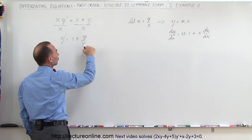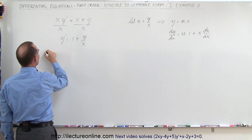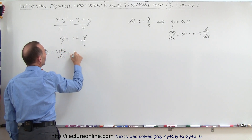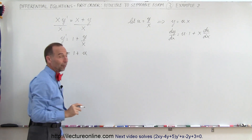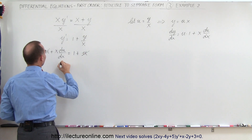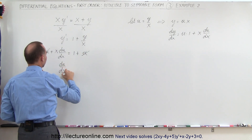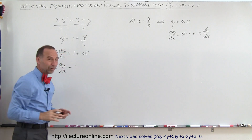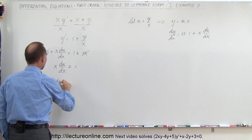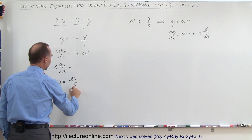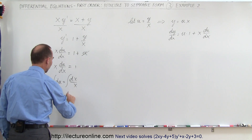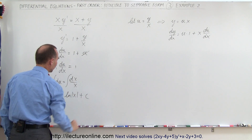When we plug that in and substitute for u, y' becomes u plus x times du/dx, which is equal to 1 plus u — since y over x is now u. What's nice about this equation is there's a u on both sides, so that cancels out. Now we have x times du/dx equal to 1. We can separate the variables: du equals dx divided by x. Integrating both sides, we get u equals the natural log of x plus a constant of integration.